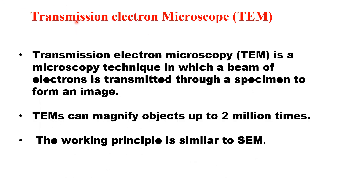Another electron microscope is the transmission electron microscope (TEM), in which the beam of electrons is transmitted through the specimen to form an image. Unlike SEM, which scans the sample surface, TEM transmits through the sample, so the sample must be very thin. TEM can magnify objects up to 2 million times.